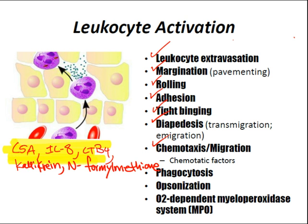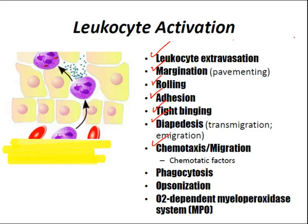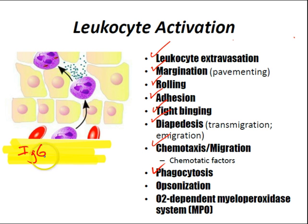Phagocytosis is the ingestion of particulate material by neutrophils and monocytes — the most important phagocytic cells. Opsonization facilitates phagocytosis by tagging specific molecules to be phagocytized. The most important opsonins are IgG and C3b of the complement cascade — remember C3b is involved in opsonization.